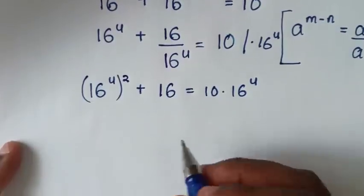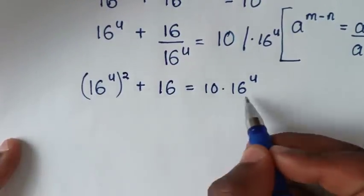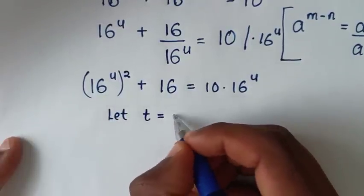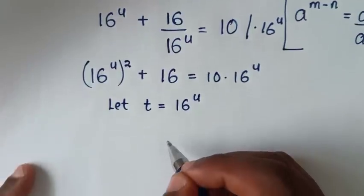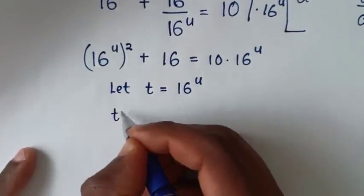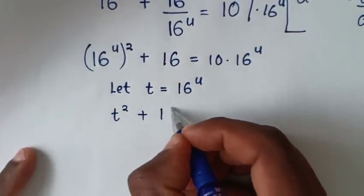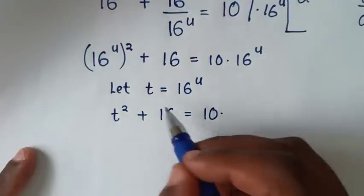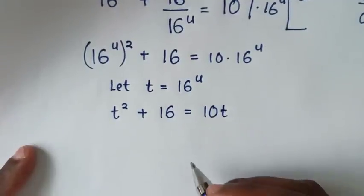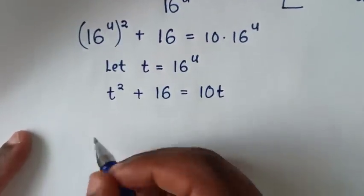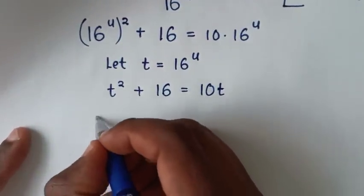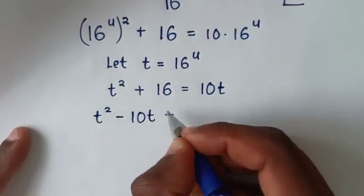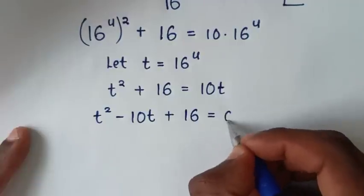In the next step, 16 power of u is common, so we let t equal to 16 power of u. Our equation will be t squared plus 16 is equal to 10 times 16 power of u, which is 10t. We'll take 10t to the left side to make a quadratic equation: t squared minus 10t plus 16 is equal to 0.